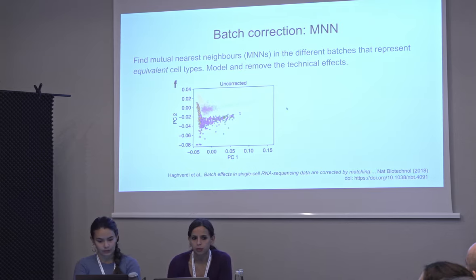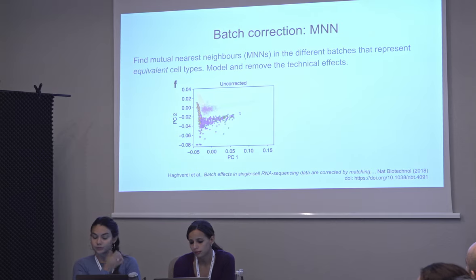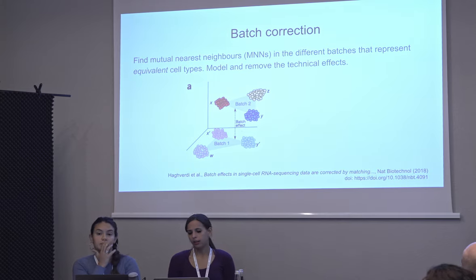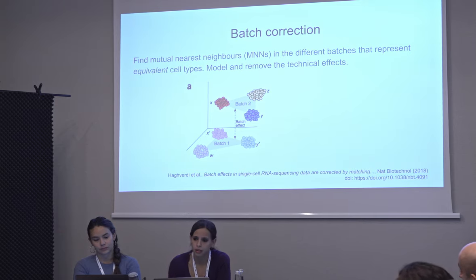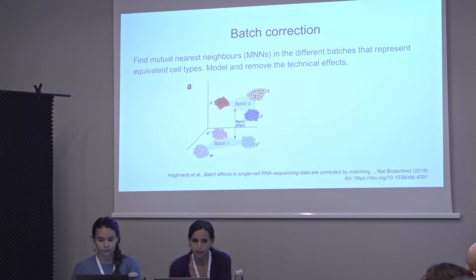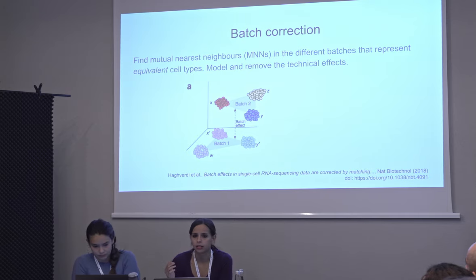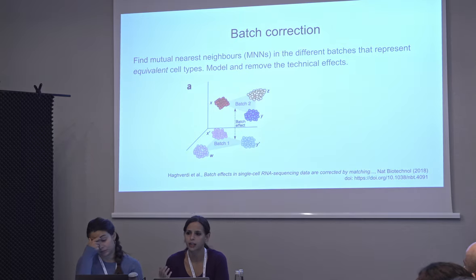This is an extreme example of very different types of data, but you can also have this effect if you perform an experiment on different days with a technical effect just from the preparation day. Even if everything else is the same, you might still be clustering your cells based on the batch. The method works by identifying mutual nearest neighbors — the idea is that a technical batch effect should be a systematic bias affecting your data in a coordinated way, so we can identify that effect, correct for it, and get a cleaner dataset where we can look at the biology.